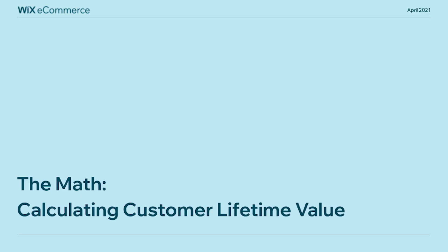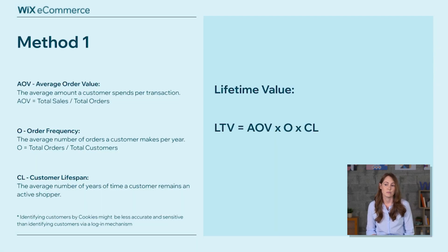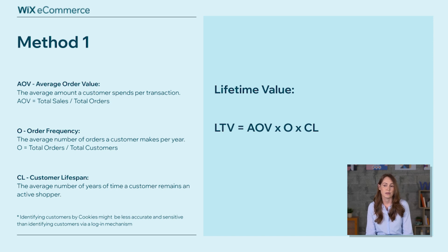So let's talk about the math. How do you calculate customer lifetime value? There are multiple methods. I'll touch on a couple of them today. Let's start with the first method, the most basic. Lifetime value equals your average order value multiplied by order frequency multiplied by customer lifespan. Average order value is the average amount customers spend per transaction. Order frequency is the average number of orders customers make per year. And customer lifespan is the average number of years a customer remains an active shopper.